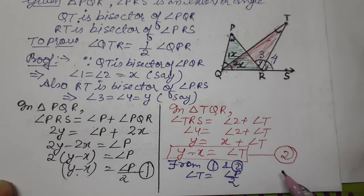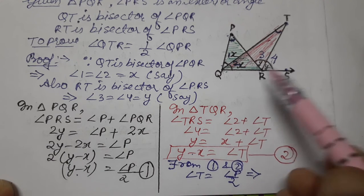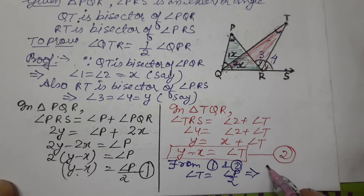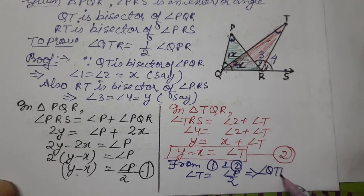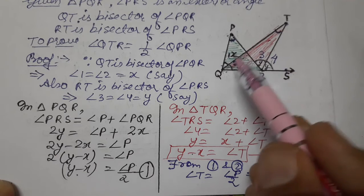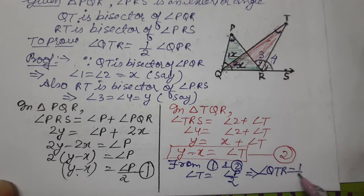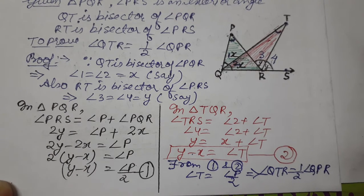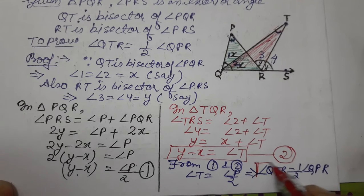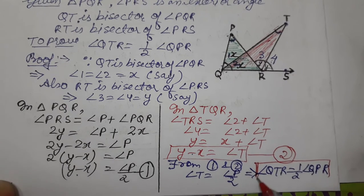Angle T, we write the full form which is angle QTR. So angle QTR equals the full form of angle P which is angle QPR, or half, which is half angle QPR. This completes our proof.